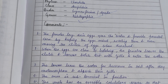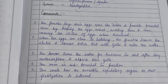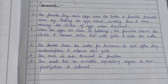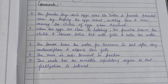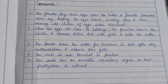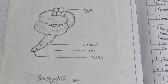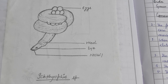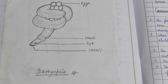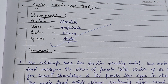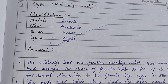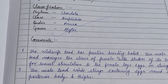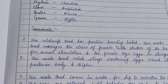Next is the Ictio fish. In this, the female lays eggs near the water and provides parental care by keeping the eggs moist, rotating them, and even moving the clutch of eggs when threatened. In this picture, the female coils the eggs around her body.